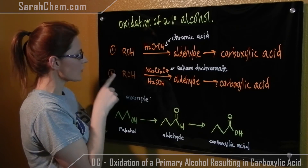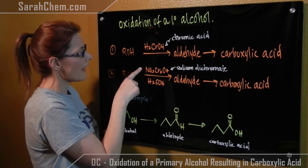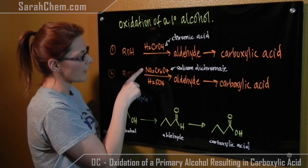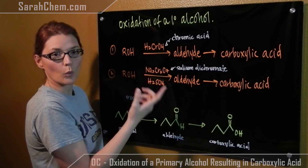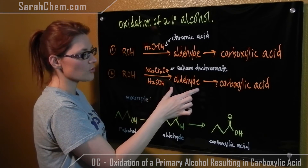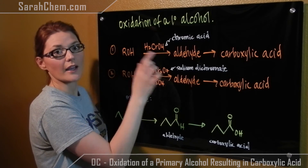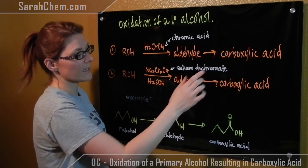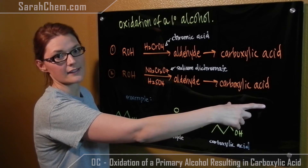This could also happen with the primary alcohol and sodium dichromate in sulfuric acid. Once again, first you get your aldehyde, but then the aldehyde will get oxidized further into the carboxylic acid.